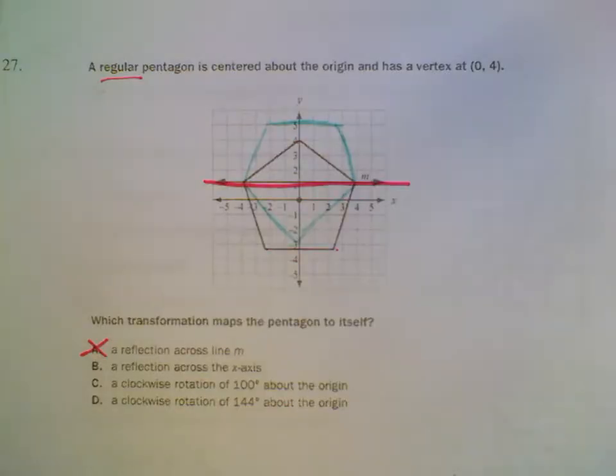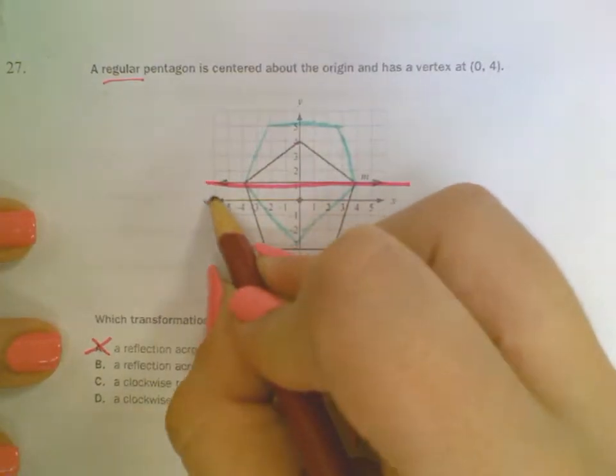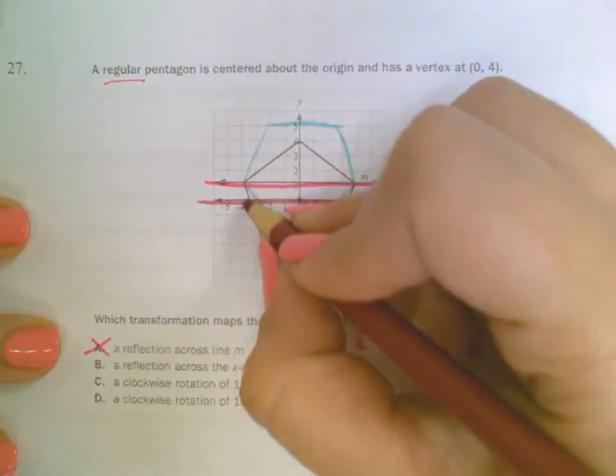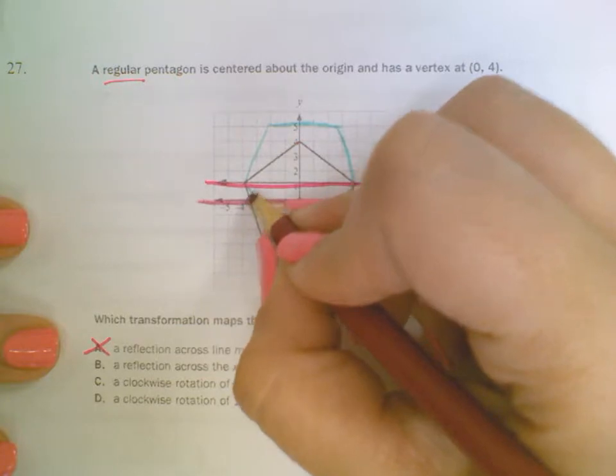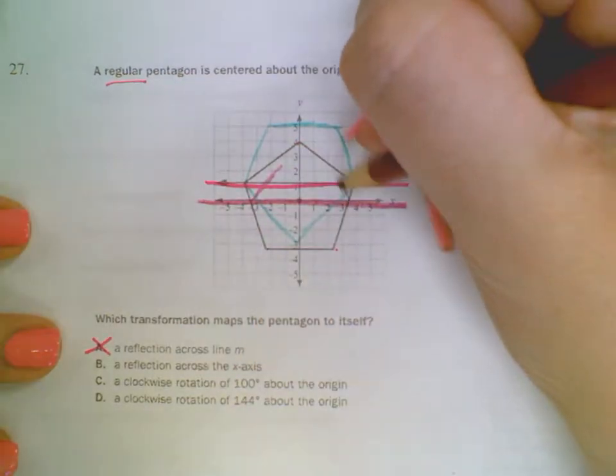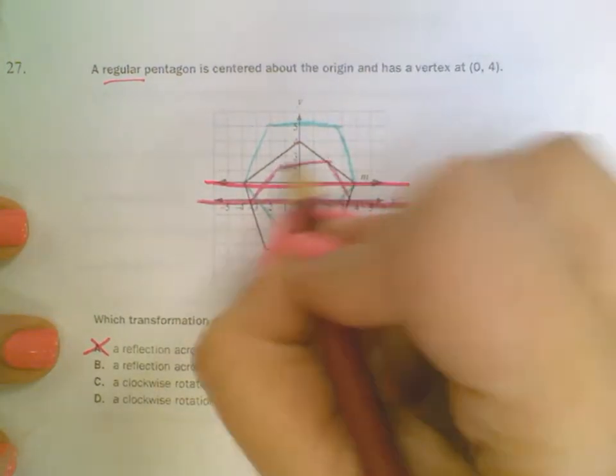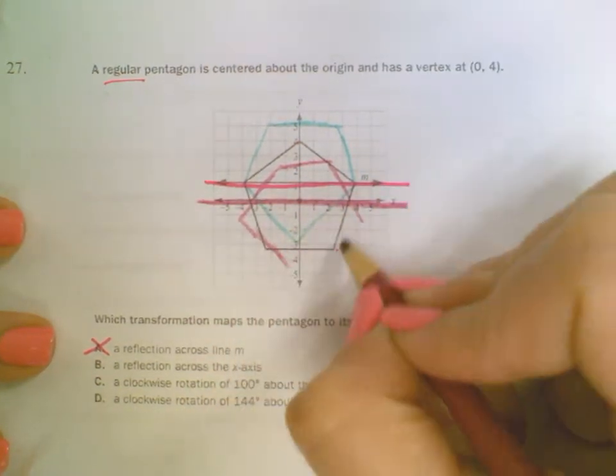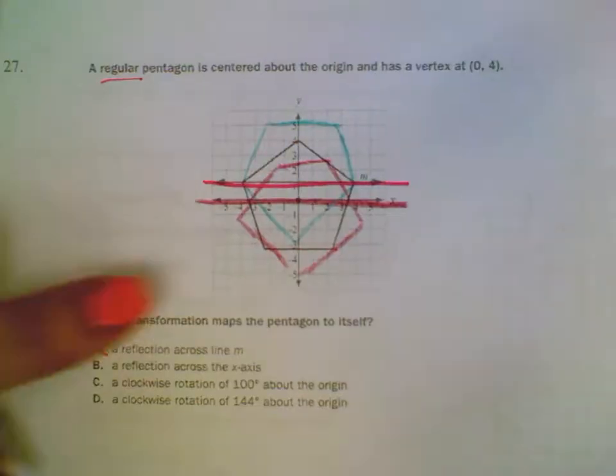Now, if I'm going to instead reflect across the x-axis, then this part would go over here, and this top part would go here. Something like that,